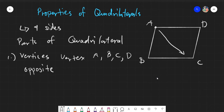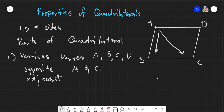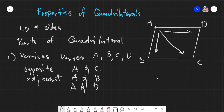When we talk about opposite vertices, this would be vertex A and C. Adjacent vertices are simply vertices that are beside each other. So vertex A is adjacent to vertex B, and vertex A is also adjacent to vertex D. Adjacent means beside, and opposite means on the other side.